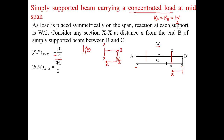As for the bending moment, it is force times perpendicular distance, which is W/2 × X. Since this moment is anticlockwise to the right of the section, it is positive. So the bending moment M = WX/2. This expression is valid for X belonging to 0 to L/2, that is, for the zone B to C.